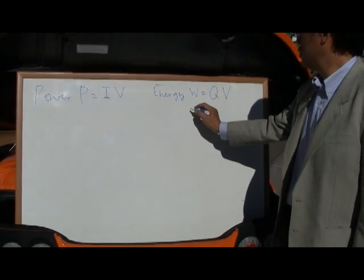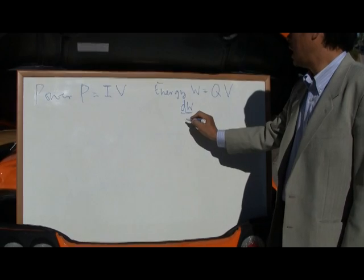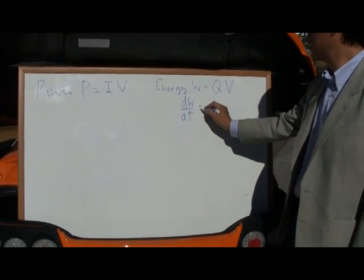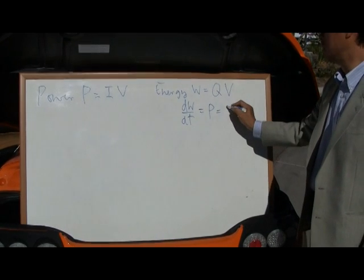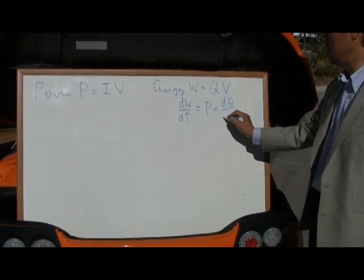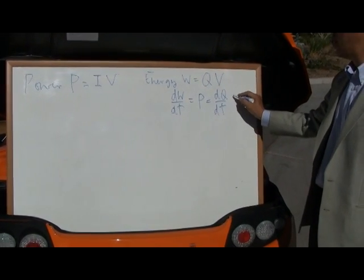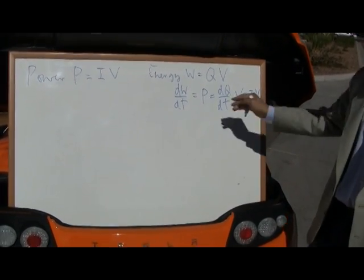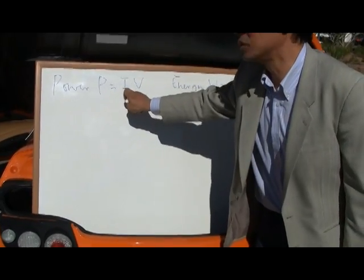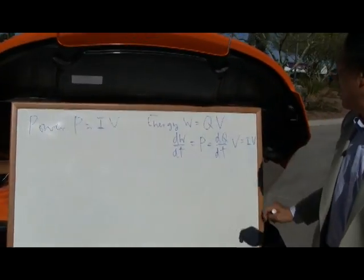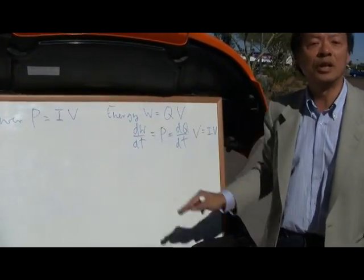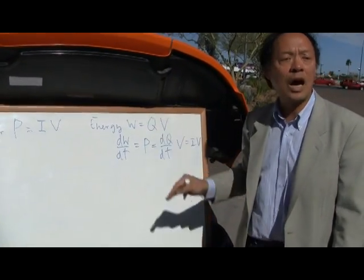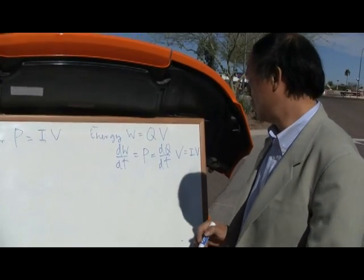And so what you have is that if you take the amount of energy divided by time, that's equal to power, and that's equal to dQ/dt, or the current flow over time, that's equal to I times V. So therefore we have this relationship.